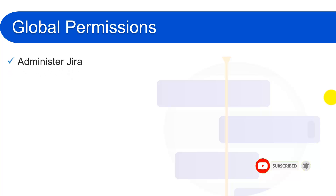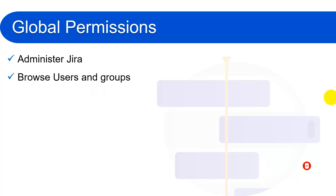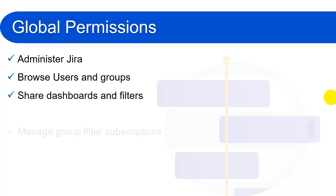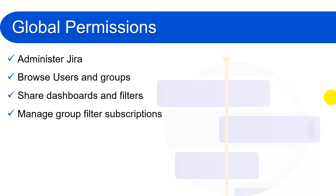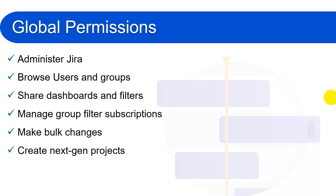The first one is Administer Jira. The second is Browse Users and Groups. The third is Share Dashboards and Filters. The fourth is Manage Group Filter Subscriptions. The fifth is Make Bulk Changes. And the last one is Create Next-Gen Projects. I'll explain all of these permissions one by one.